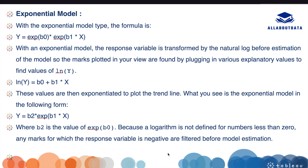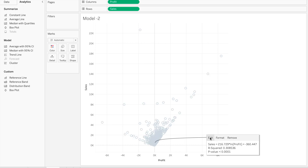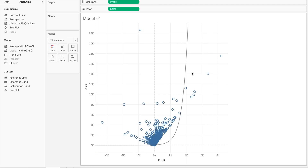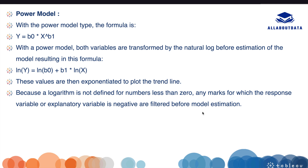The exponential model formula is y = e^(b0) · e^(b1·x), or equivalently y = b · e^(b1·x). To use it, right-click the trend line, go to Edit, and change the model to Exponential. You can see the formula, R-squared, and p-value displayed on hover.